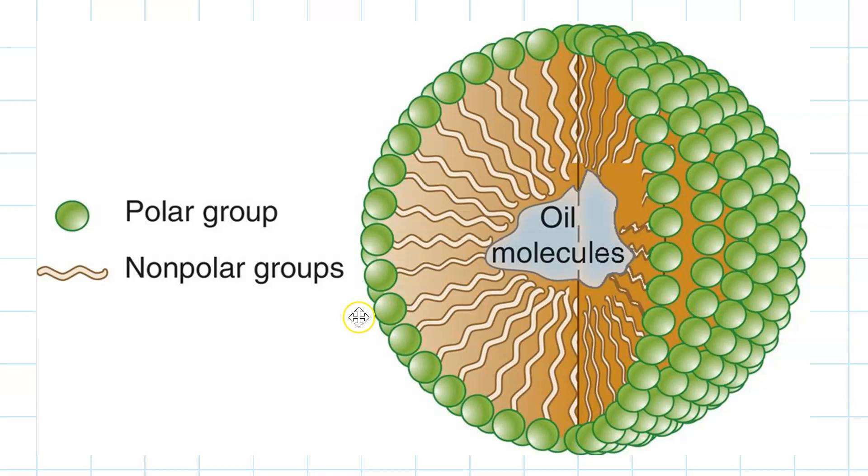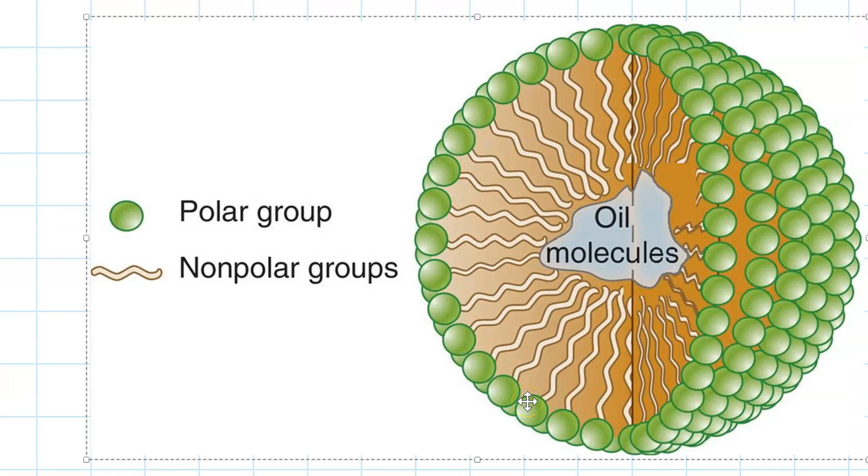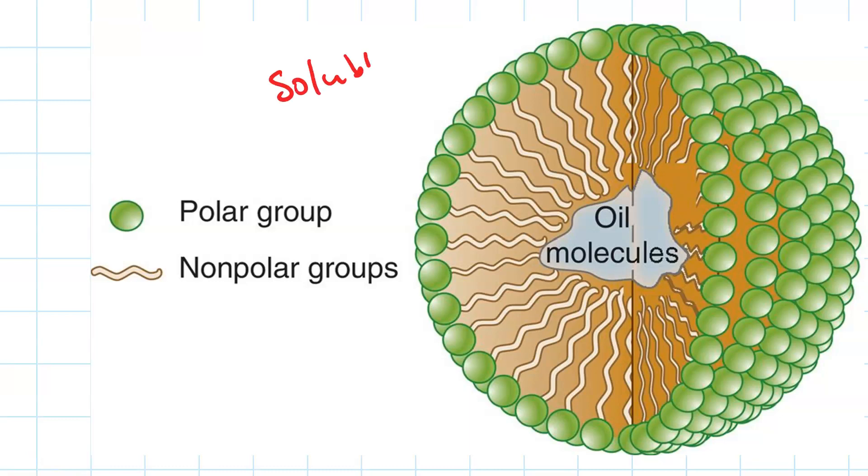When you mix detergent with water, the detergent molecules, their hydrophobic tails interact with oil molecules, and the polar group, that is the hydrophilic region, faces the outside. So, this little micelle, now, is soluble in water. Just because the surface is hydrophilic.